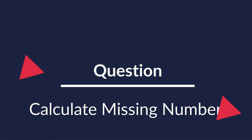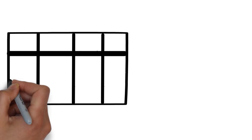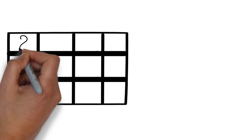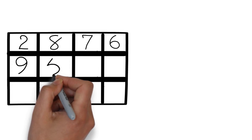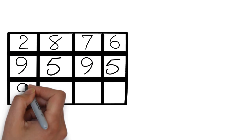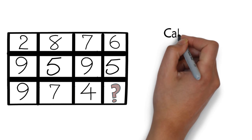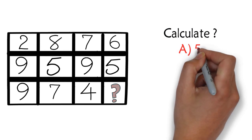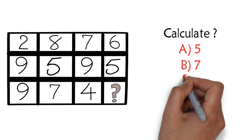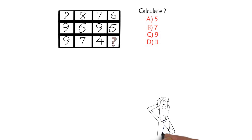Here's one of my favorite questions because it is very frequently used in a test. You're presented with a four by three matrix. Each cell in the matrix has numbers. For example, the first row has numbers two, eight, seven, and six. The second row has numbers nine, five, nine, five. And the third row has numbers nine, seven, four. The number in the bottom right corner is missing, and this is exactly what you need to calculate. You can choose from four choices: A five, B seven, C nine, or D eleven.